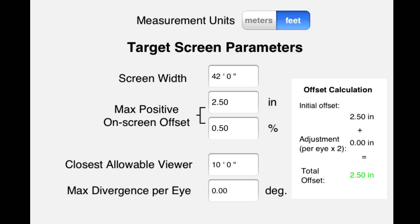You should note, of course, that you can enter this max positive offset as either a fixed distance, such as 2.5 inches, or you can enter it as a percentage of screen width, at which point the program will calculate the fixed distance for you.